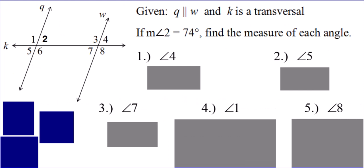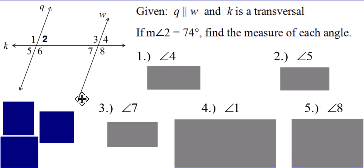180 minus 110 is 70 degrees, so there's your measure for angle four. Now, the middle section of the second page. Given Q is parallel to W — and you can see that here, here's Q, here's W, they're definitely parallel — or they definitely look parallel.